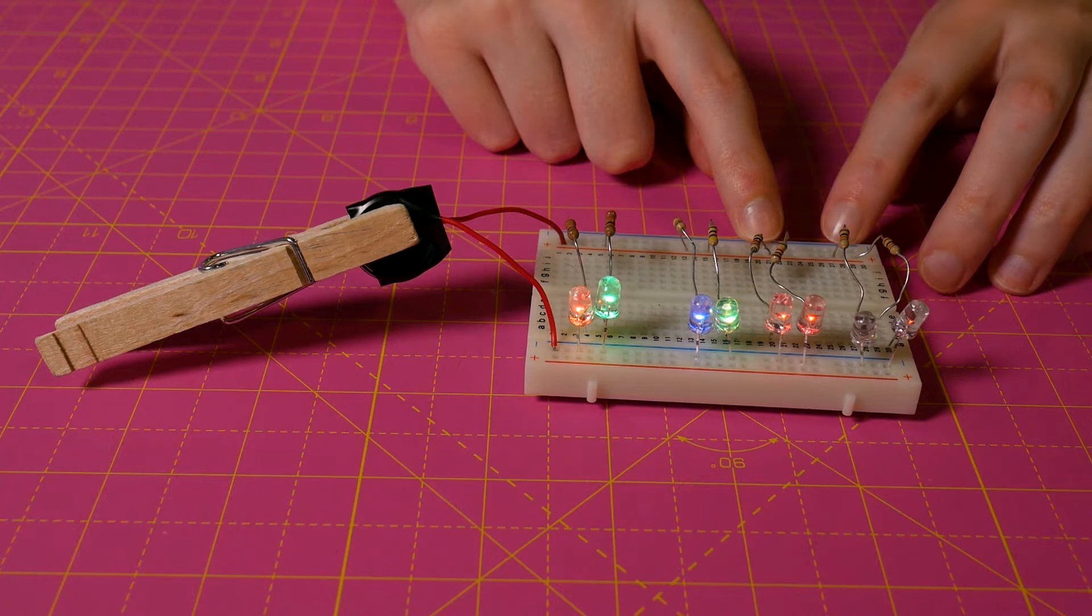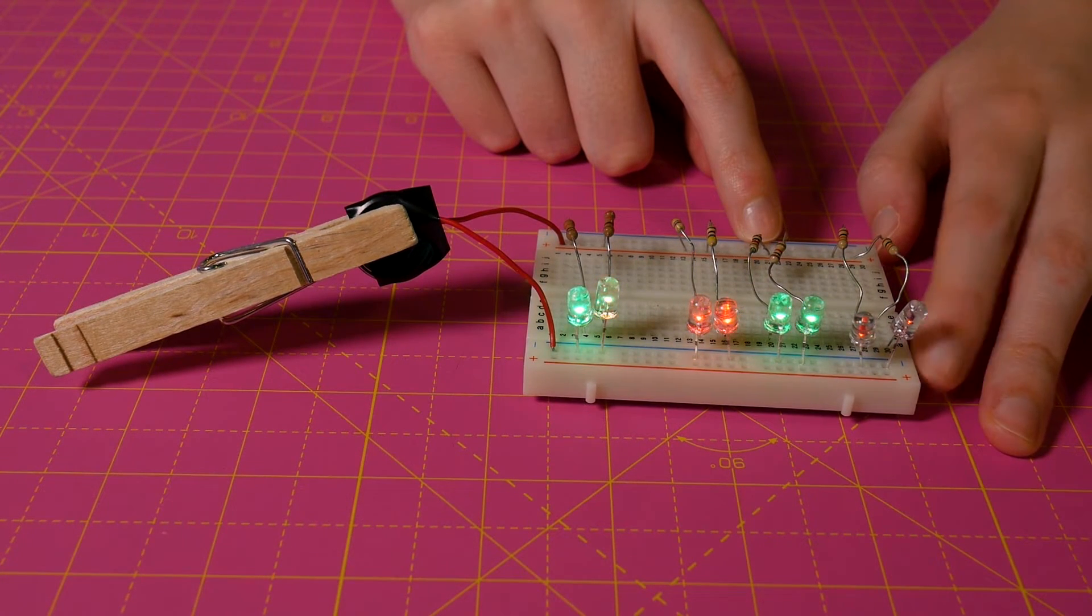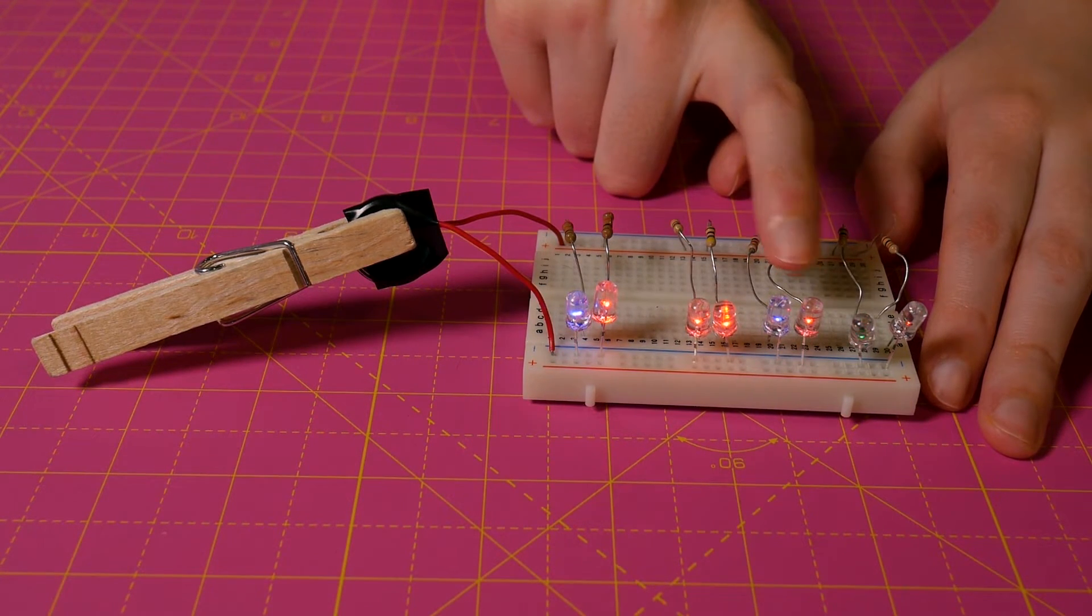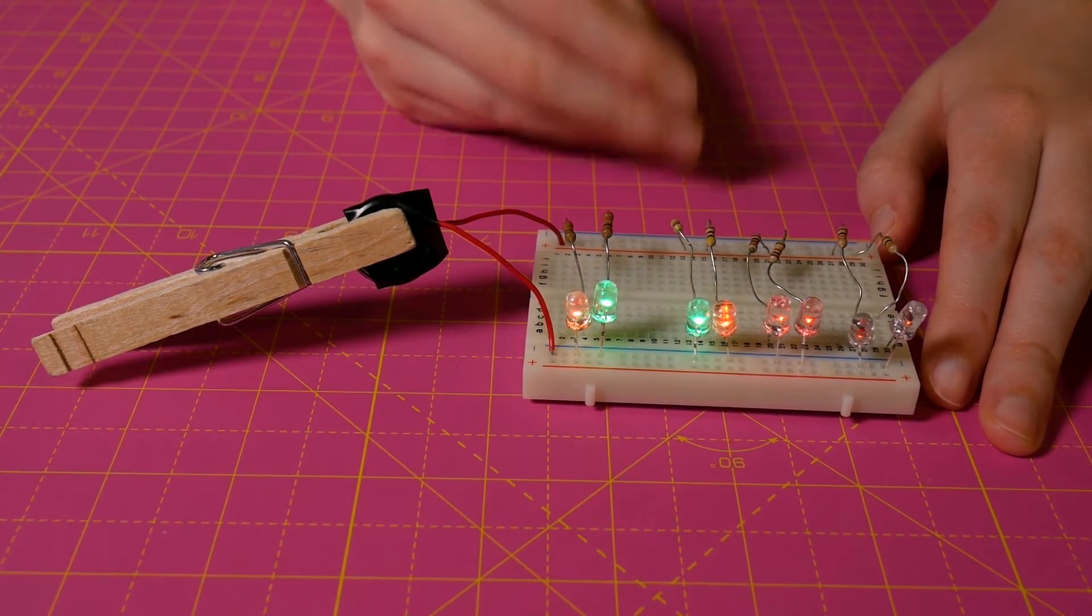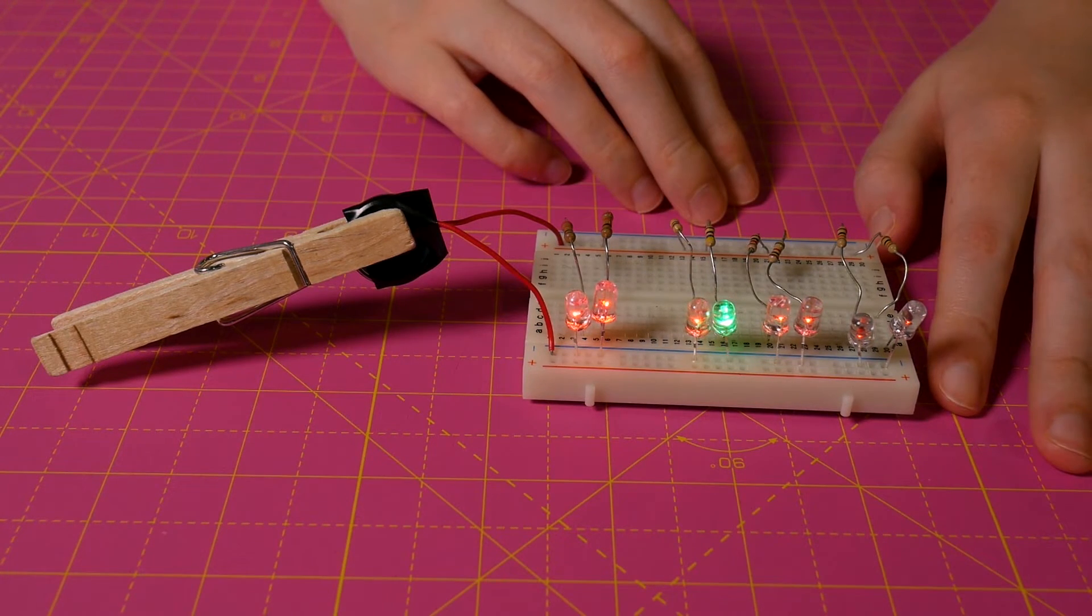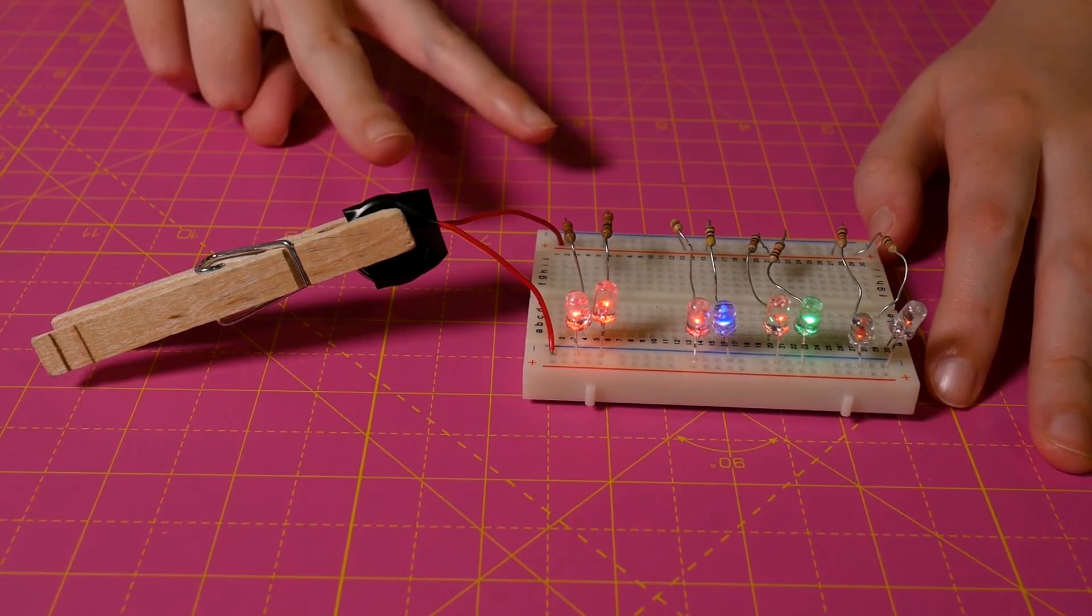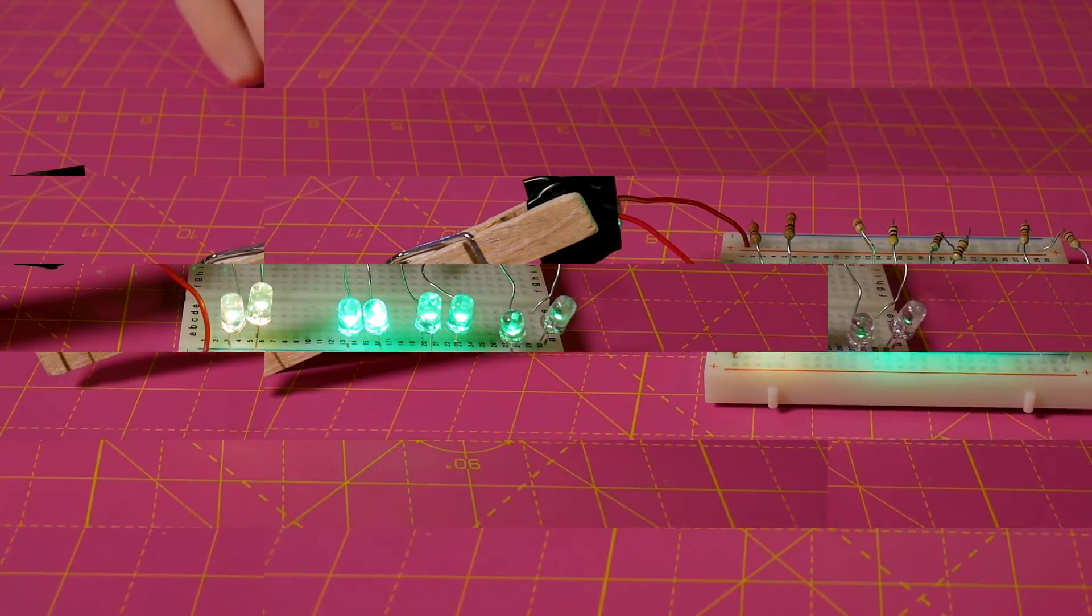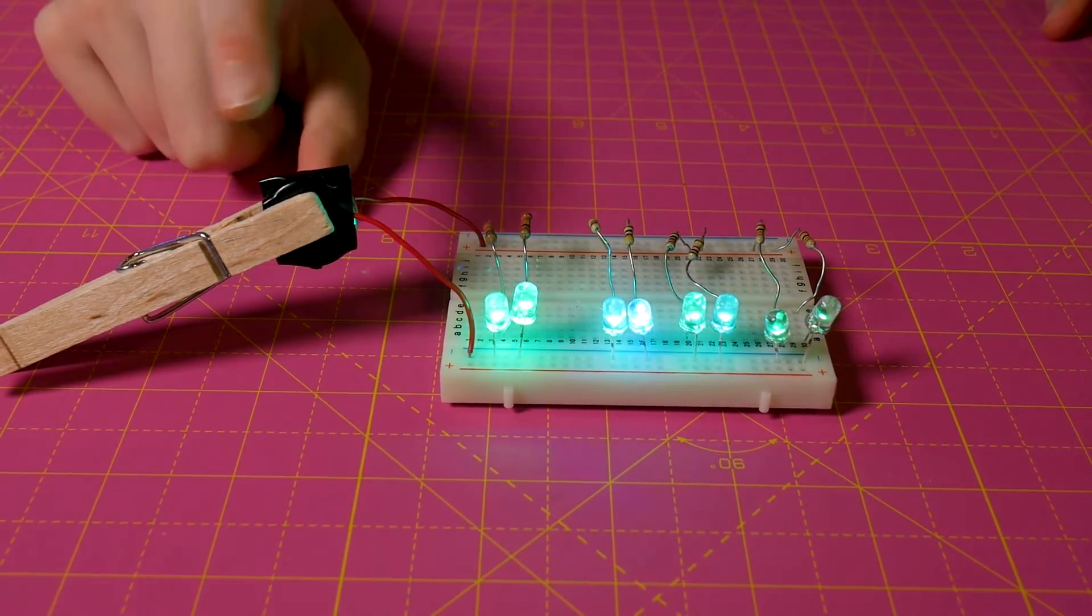So then I started testing with the 1k and the 10k. The 10k, it's not even worth it really. The 1k, you know, we're getting some decent brightness but we're not getting that PWM because it's just not getting enough voltage. So I decided to try two coin cell batteries.